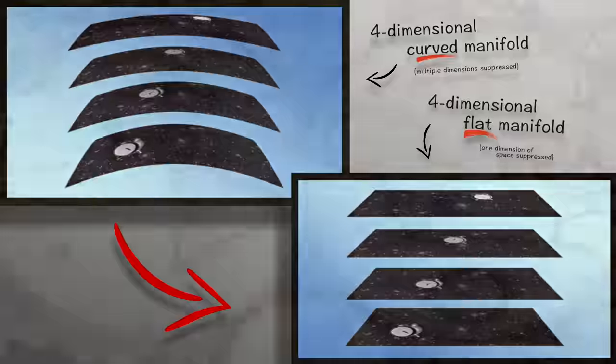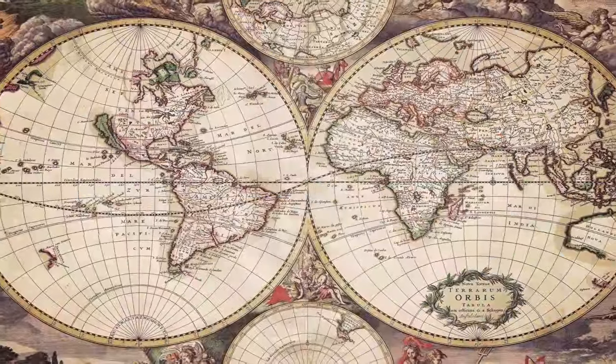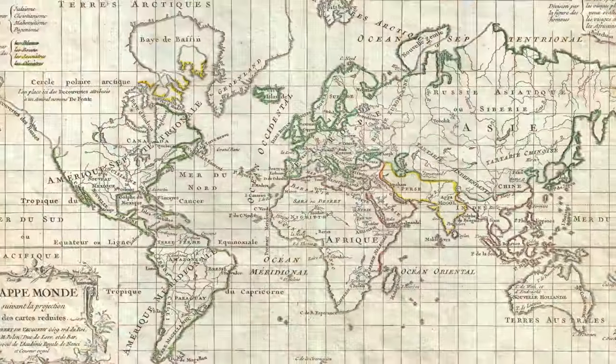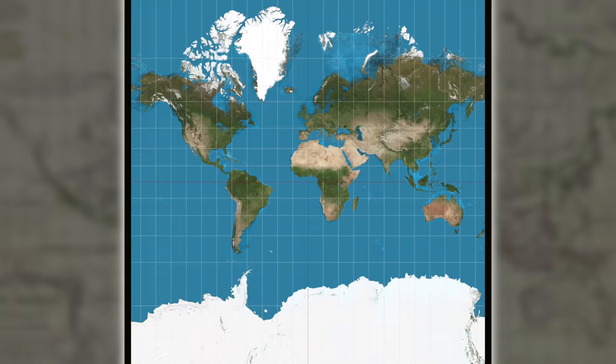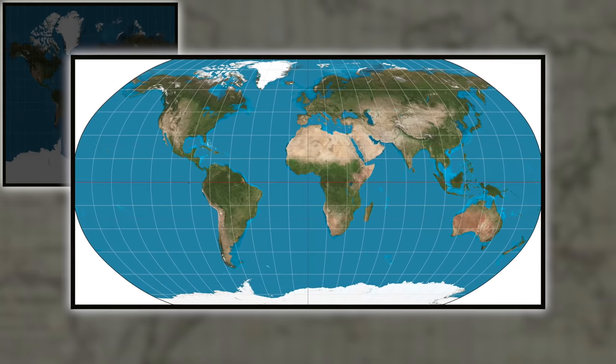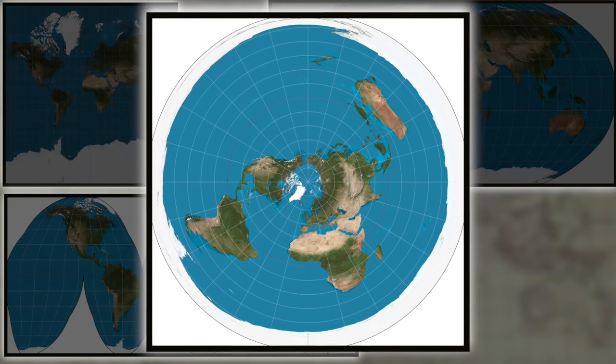Now, over the centuries, cartographers have developed many different types of map projections. There's the Mercator, Robinson, Goodes, the azimuthal equidistant, etc.